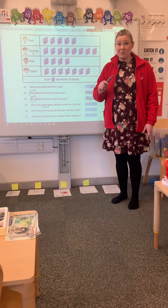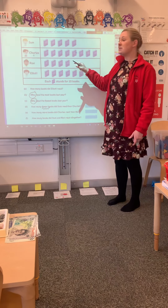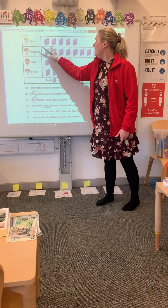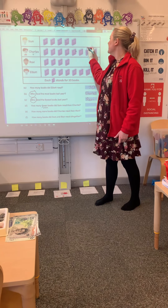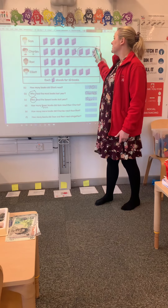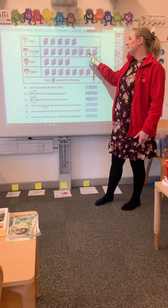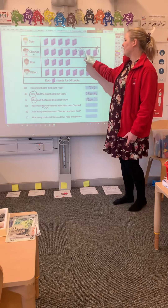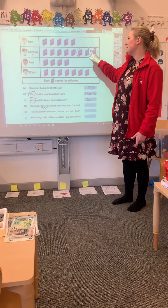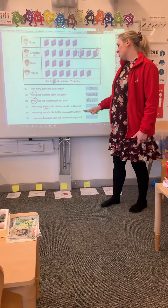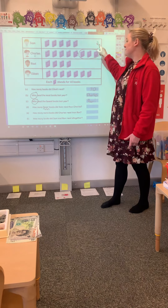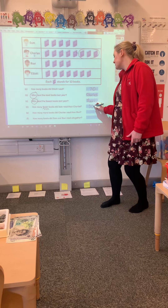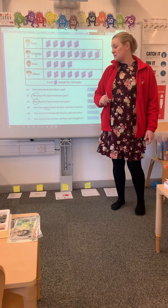A really easy way of doing this is to look at it more like a bar model. I can see the amount that Sam and Charles share in common, and this extra amount is what Charles read additionally — which is how many fewer Sam read. So counting that extra portion: 10, 20, 30 books. Sam read 30 fewer books than Charles. There are various methods — find the one that suits you.